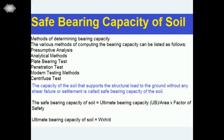The formula for the safe bearing capacity of the soil is: Safe Bearing Capacity equals Ultimate Bearing Capacity divided by Area multiplied by the Factor of Safety. So the safe bearing capacity of soil = UBC / (Area × Factor of Safety).